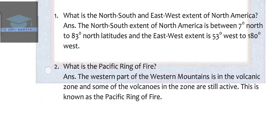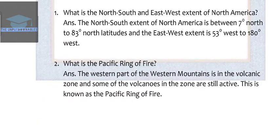Question 2: What is the Pacific Ring of Fire? The answer is the western part of the western mountains is in the volcanic zone and some of the volcanoes in the zone are still active. This is known as the Pacific Ring of Fire.